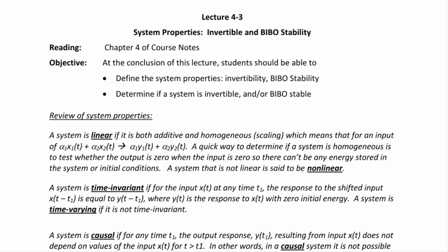For the last couple of lectures, we have been discussing system properties. The first was linearity, which states that the system satisfies both additive and homogeneous scaling: for an input of α₁x₁(t) + α₂x₂(t), the output will be α₁y₁(t) + α₂y₂(t). We also discussed time invariance, where a shifted input x(t − t₁) produces a shifted output y(t − t₁).